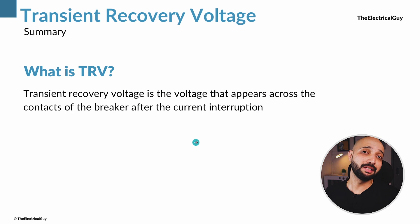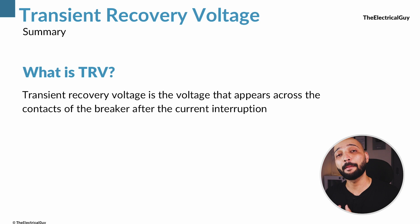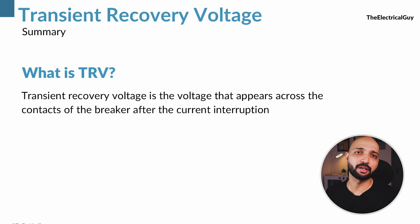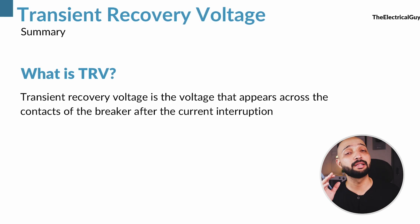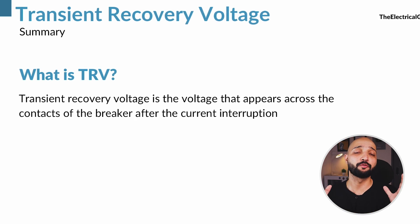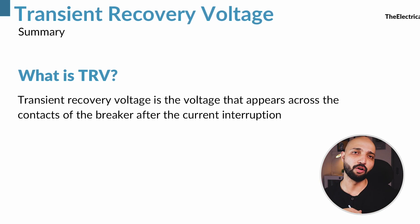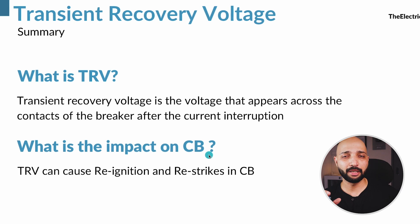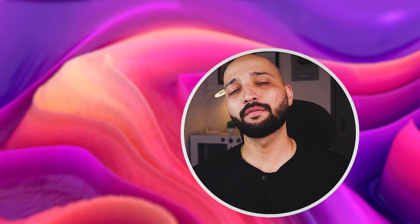To summarize: transient recovery voltage is the voltage that appears across the contacts of the breaker after current interruption. This voltage appears because when the circuit breaker opens, the link between the two networks is broken, and the trapped charges on both sides of the network redistribute and appear across the terminals of the breaker. I hope you have now understood what transient recovery voltage is and that this video has helped you in understanding that.